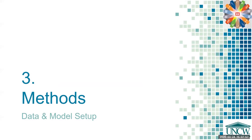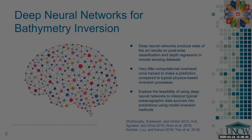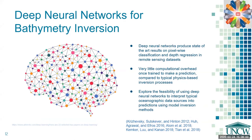Now I will quickly present our data and model setups. We chose to use deep neural networks for our bathymetric inversion problem because of their ability to produce state-of-the-art results on pixel-wise classification and depth regression in other remote sensing data sets. Also, deep neural networks have very little computational overhead and operational cost once they are trained to make a prediction. This would produce significantly quicker predictions compared to the typical physics-based inversion processes that typically involve expert identification. Because of these advantages, we look to explore the feasibility of using deep neural networks to interpret oceanographic data sources and the predictions using model inversion methods.